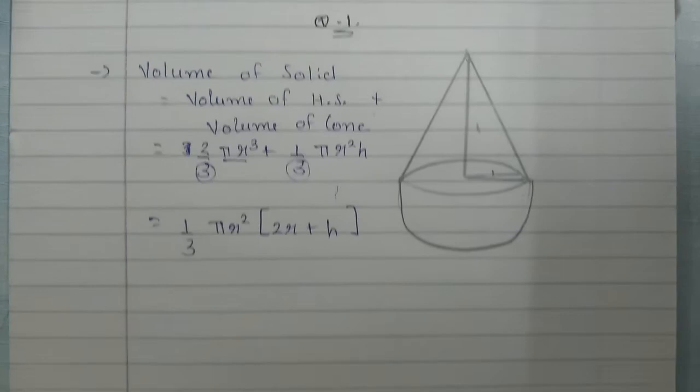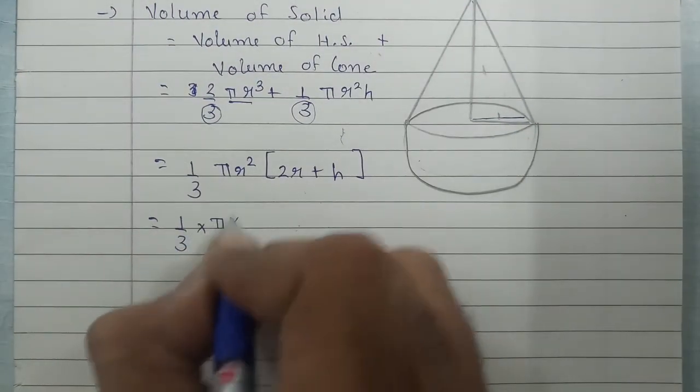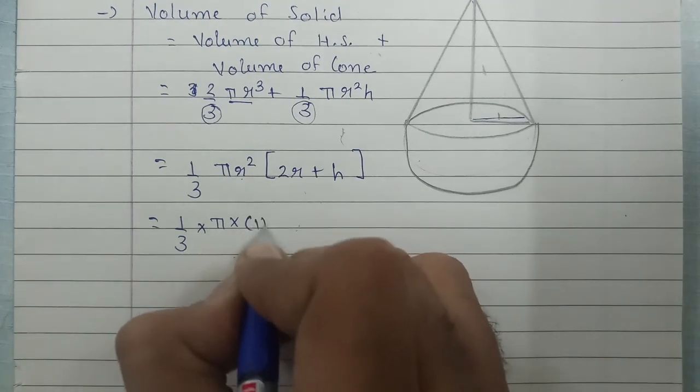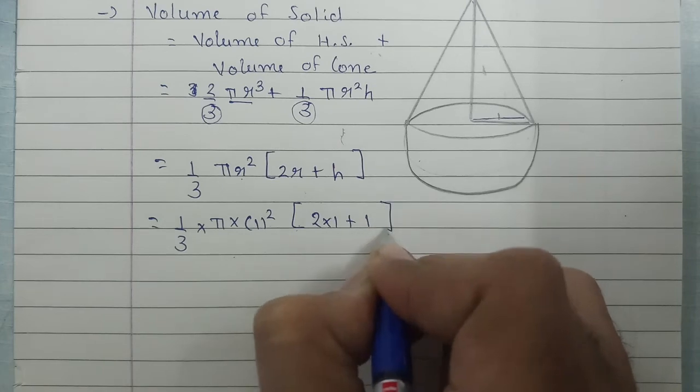Now put the available values: 1 by 3 pi, in place of r put 1, bracket me 2 times 1, in place of h also put 1.